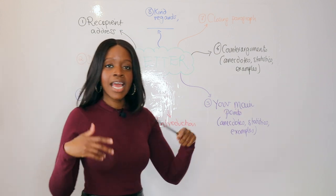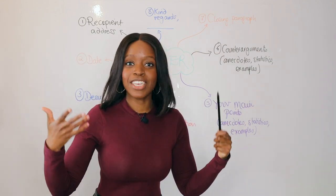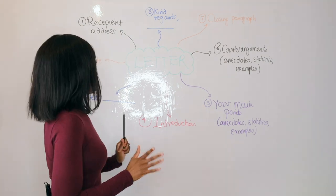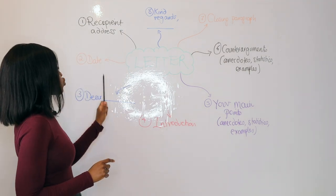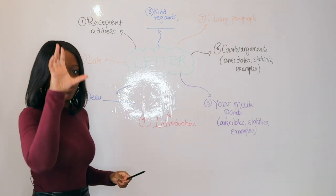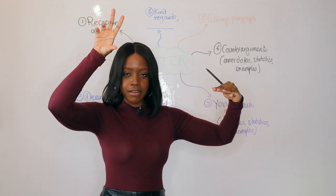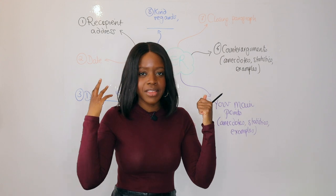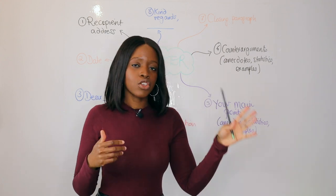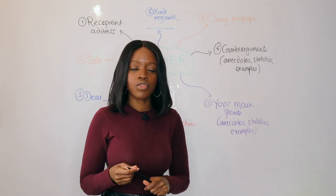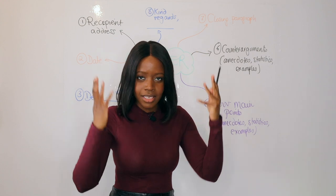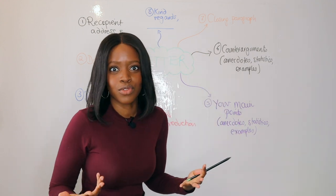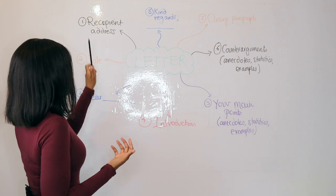That's the recipient address — MP Sally Smith, 1 Westminster Way, London, SW1 1HK. That's step number one done. Then, going back to the left-hand corner of your page, you add the date. Don't make the date unrealistic. I would suggest just putting the date that you've written it, for example 1st of December 2022.